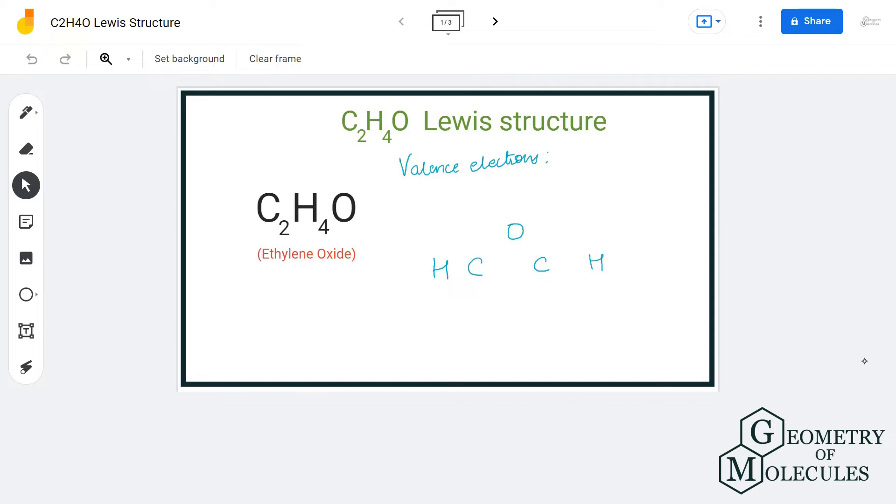Hi guys, welcome back to our channel. In today's video we are going to do ethylene oxide Lewis structure. It has a chemical formula of C2H4O. To determine its Lewis structure we will first look at the total number of valence electrons for this molecule.